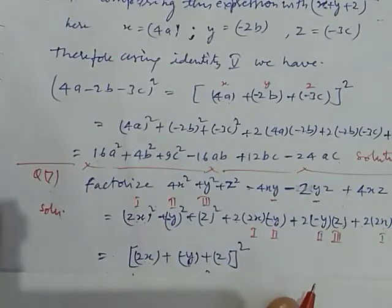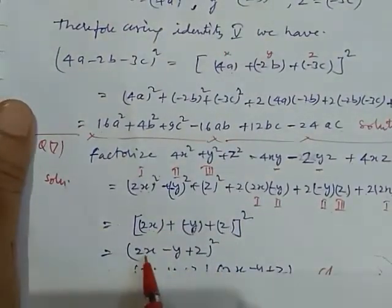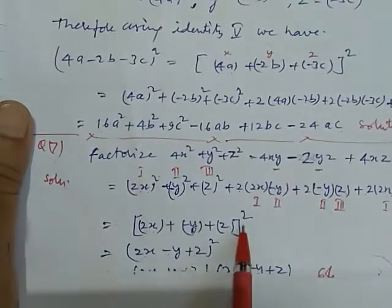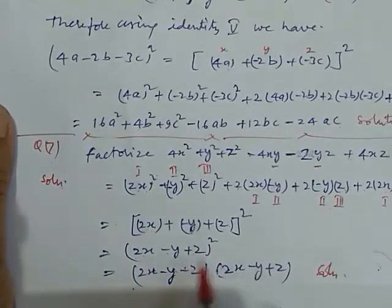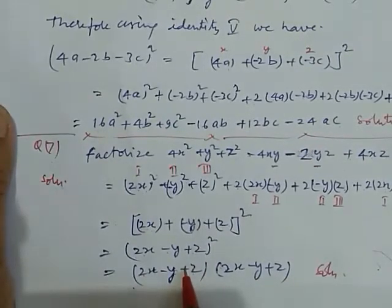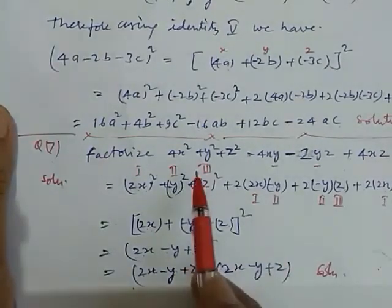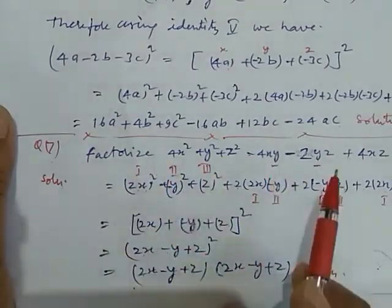Now, here the square, so write this two times: 2x minus y plus z into 2x minus y plus z. This is our solution. So, by this way we can solve the factorization problem. First, we make whole squares of these three terms. And with these three terms, we change this into this form. And then write this whole expression as first plus second plus third term whole square. So, we get the solution.